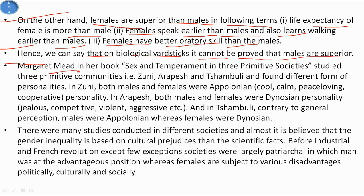Margaret Mead in her book 'Sex and Temperament in Three Primitive Societies' studied three primitive communities - Zuni, Arapesh, and Shambuli - and found different forms of personality. In Zuni, both males and females were Apollonian, meaning cool, calm, peace-loving, and cooperative in personality.